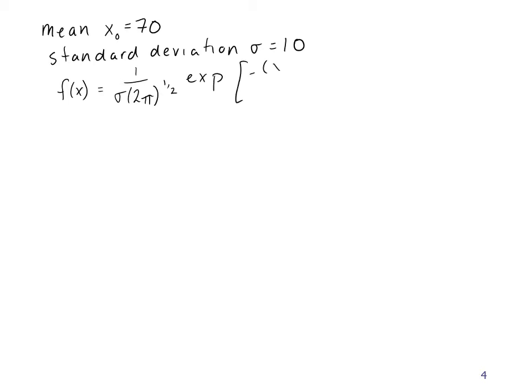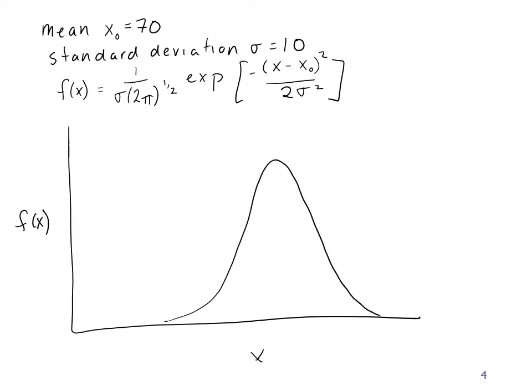Let's talk about the Gaussian or normal distribution using an example. Maybe we have an exam where the mean score was 70 and the standard deviation sigma was 10. The frequency of any given score then is described by this function f of x equals 1 over sigma times 2 pi to the 1 half times the exponential of negative x minus x naught all squared divided by 2 times sigma squared. So if I go ahead and plot that function I would find that the curve looks something like this where the peak is at 70.